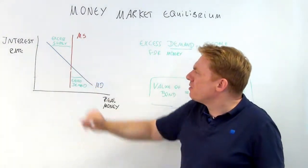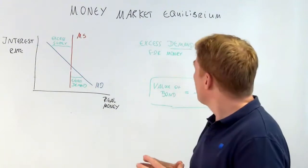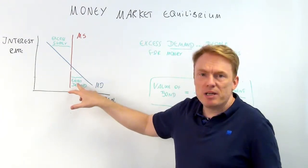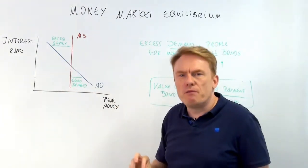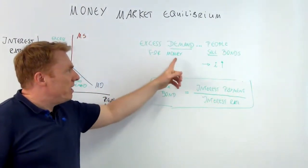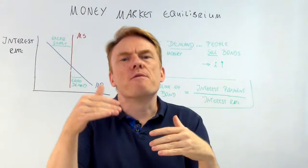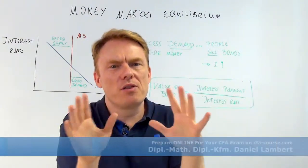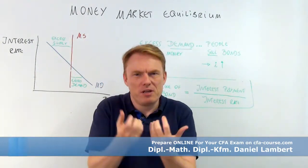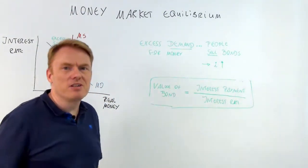And of course there is an equilibrium — an equilibrium interest rate. What you need to understand is the two movements: if there is an excess demand for money or an excess supply of money. We just have two positions: we have money and we have bonds. There is no other type of wealth allowed here — only money and bonds.